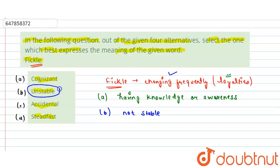This is the synonym. So unstable, which means not stable, changing loyalty. So same as unstable. So option B is the correct answer.